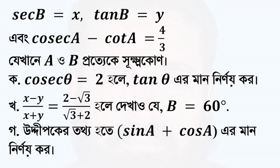A process: sec B equal to x, tan B equal to y. Given sec² minus tan² equal to 4 by 3. We need to find angle A, where the angle is between 90 degrees and 0 degrees.